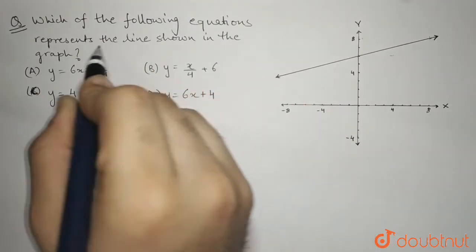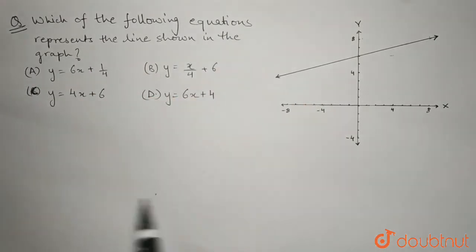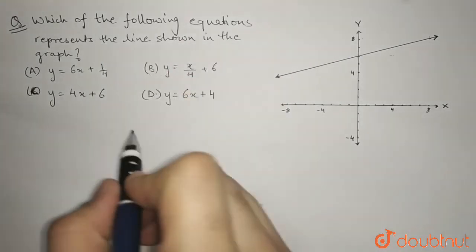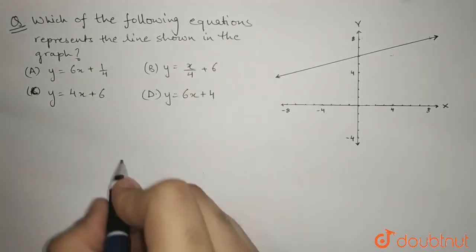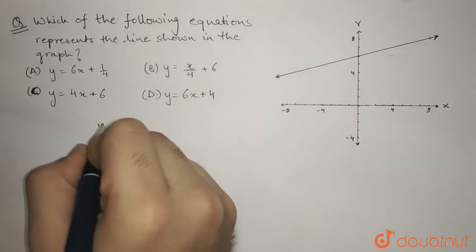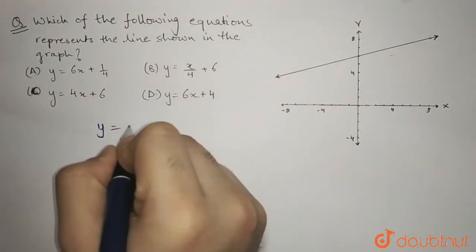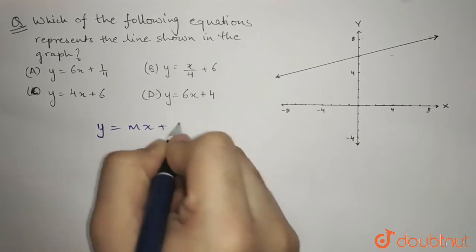We can see that all the options here are in slope intercept form. So they are given in slope intercept form which is like y equals mx plus c.